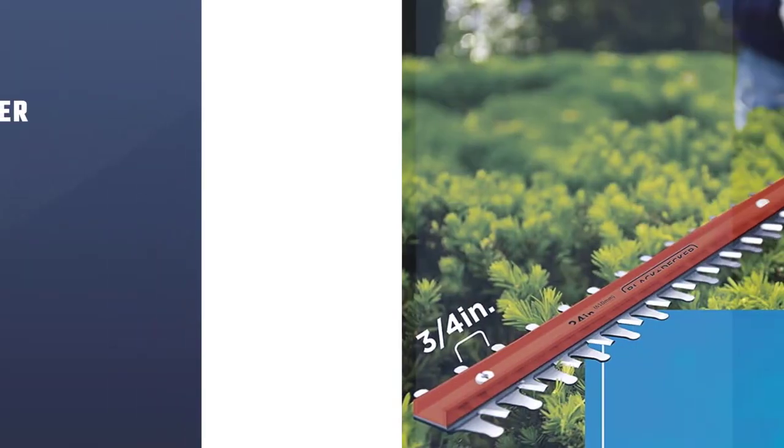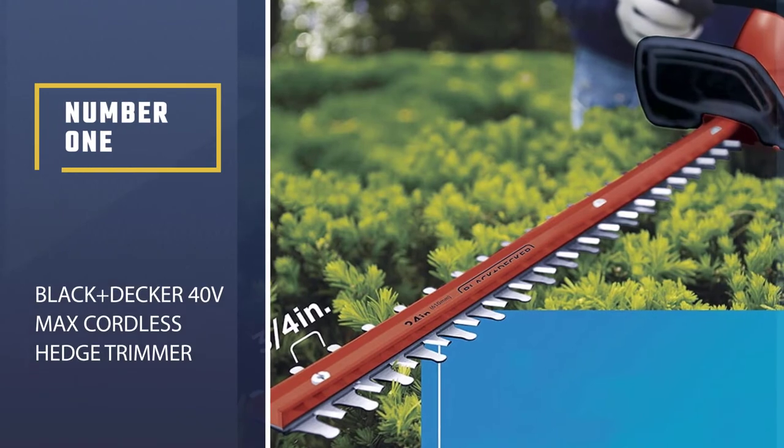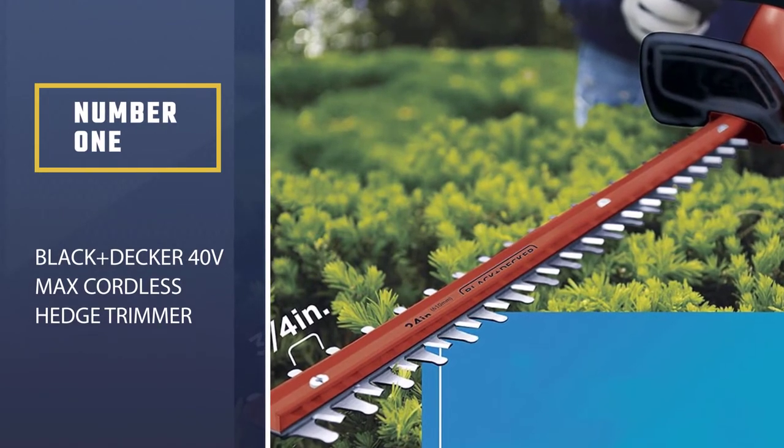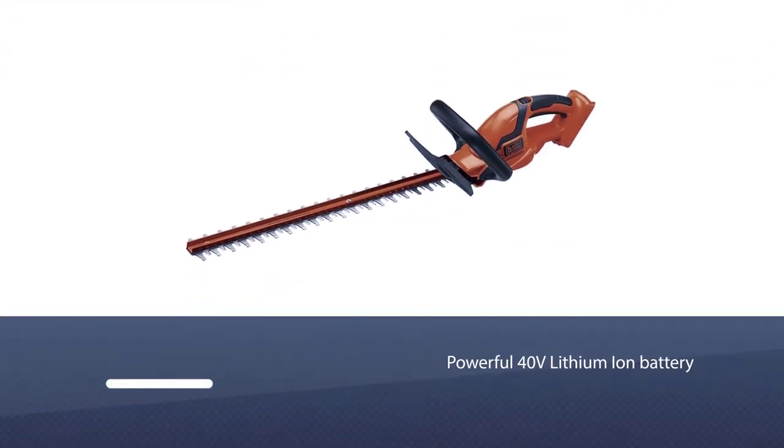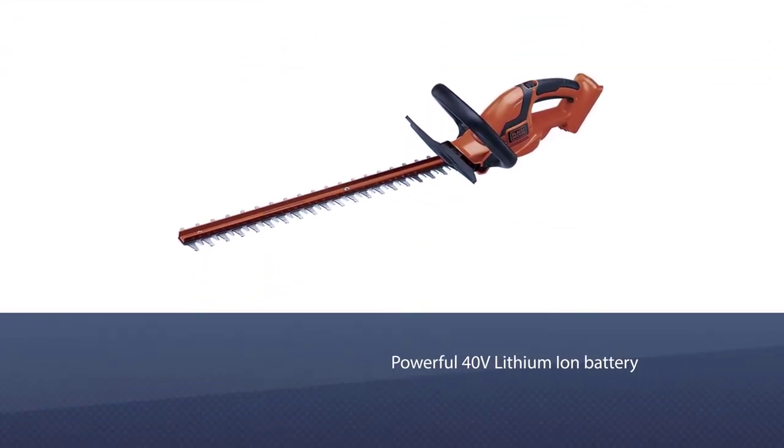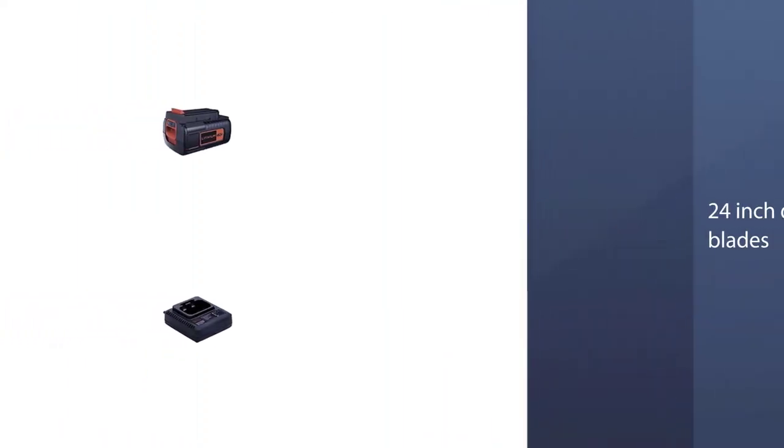Number one: most popular Black + Decker 40V Max cordless hedge trimmer. Our top choice for a cordless hedge trimmer would have to be this 40-volt battery powered option from Black + Decker. It sports an impressive 24-inch long blade and an ergonomic handle that makes hedge trimming comfortable and efficient.